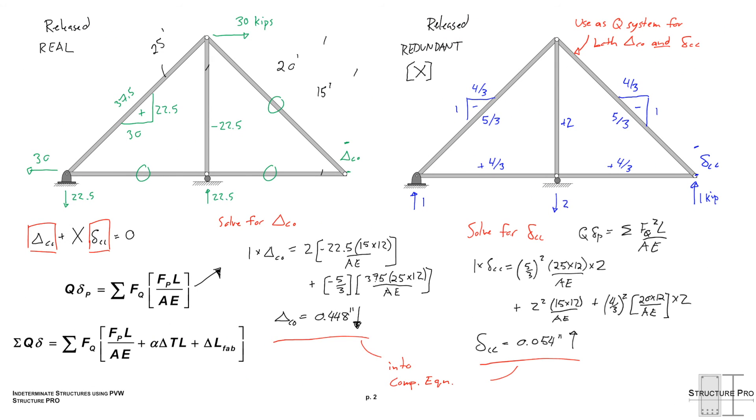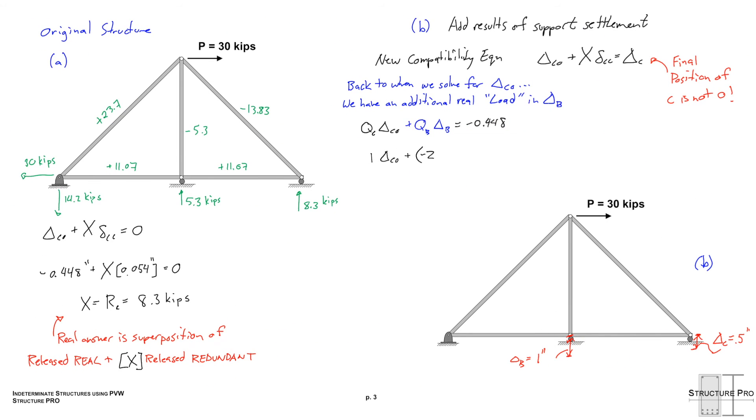So you have the first Q delta P which is QC delta C0 but then we have another Q delta P, QB times delta B. Going back here you can see that the QB is negative 2. It's 2 going down so negative 2 times delta B of 1 inch and it's our same final answer negative 0.448 inches. And this leads us to a delta C0 of negative 2.448 inches.